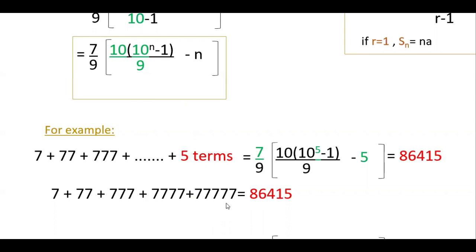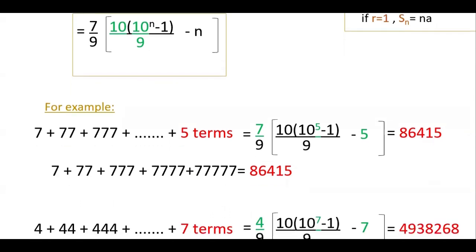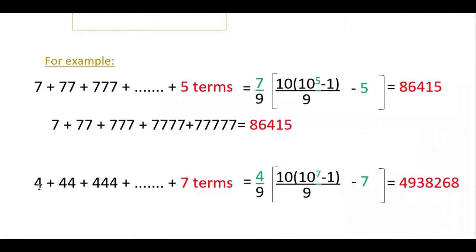So you can directly use this formula when the number of terms is large. Similarly, you can substitute any value. For example, if you want to find 4 plus 44 plus 444, just change 7 to 4 and adjust n. In the same way, you can find 5 plus 55, or other numbers in this type of sequence.